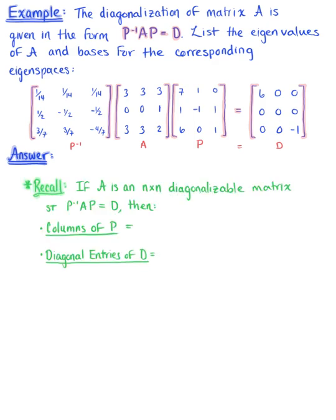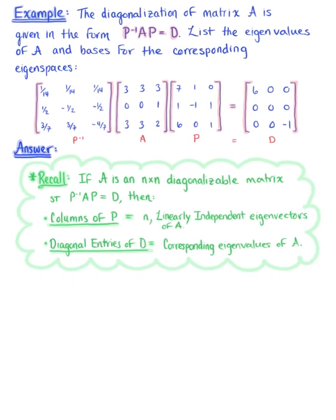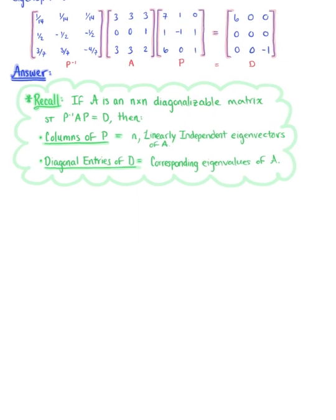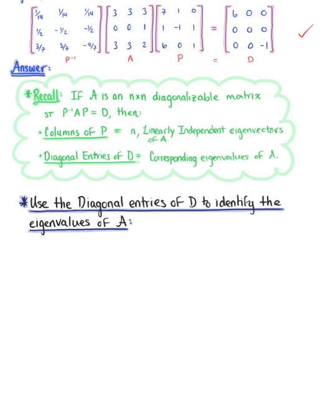Recall that if matrix A is an n by n diagonalizable matrix such that P⁻¹AP = D, then the columns of matrix P are n linearly independent eigenvectors of matrix A, and the diagonal entries of matrix D equal the corresponding eigenvalues of matrix A. Since we already have a diagonalizable matrix in this form, we can immediately use the diagonal entries of D to identify the eigenvalues.